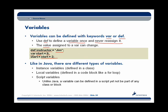Like in Java, there are different types of variables. We have instance variables defined inside of a class — we might also call those attributes or properties. We have local variables, typically defined in code blocks, for example inside of a for loop. We also have script variables, which have no real Java synonym because they act almost as global variables — defined inside a script yet not part of any class or block.